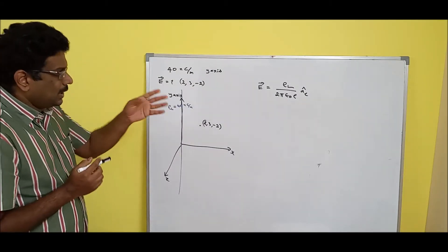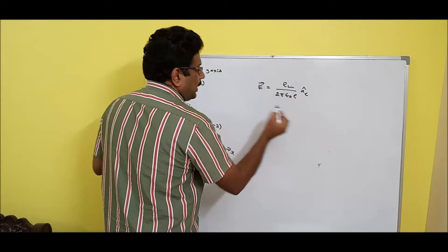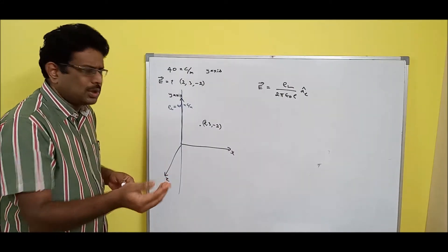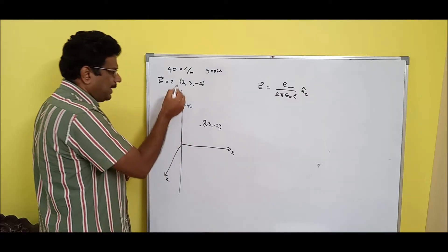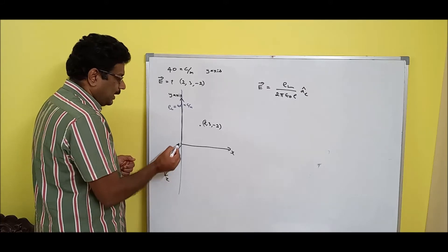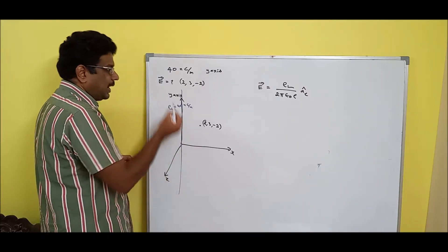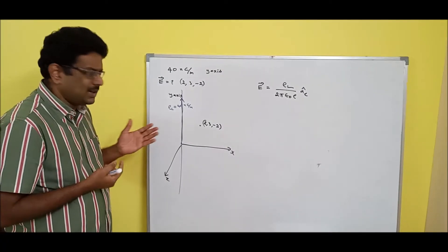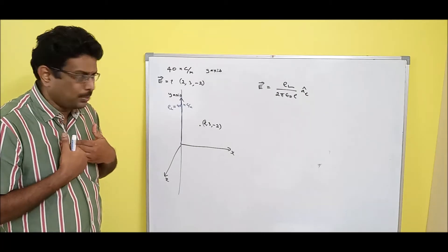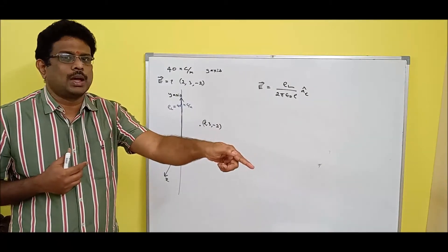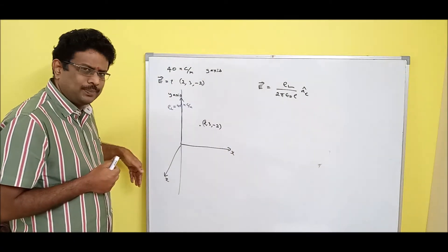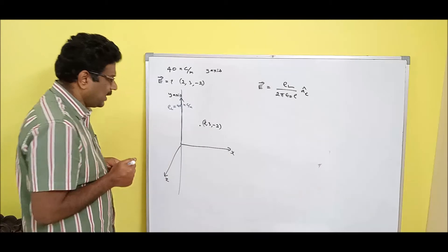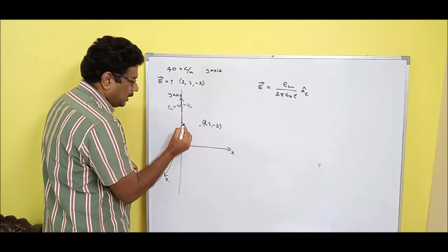What is the distance between point P and the infinite line charge? People may think it is from the origin, or from minus infinity, or plus infinity — but it should be the shortest distance. If I ask the distance between myself and this board, I should not calculate to a corner or with respect to the origin. The shortest distance is the actual answer.